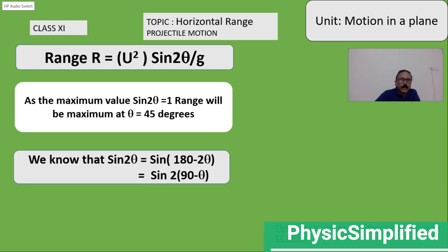Now, if you observe this equation, I can write sin 2θ as sin (180 - 2θ). If I take 2 as common, it appears to be sin 2(90 - θ). So, in place of θ, here it is 90 - θ.